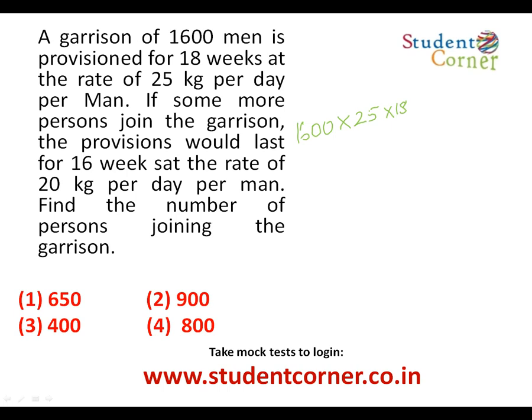It is asking to find the number of persons joining the garrison. If the same total quantity is available, 1600 plus k men eating 20 kg per day lasts only 16 weeks. So we have: 1600 × 25 × 18 = (1600 + k) × 20 × 16. Let us solve it.